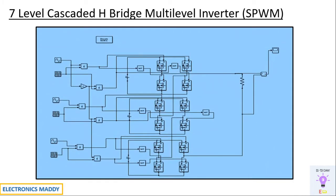This is the MATLAB model of a seven level cascaded H-bridge multi-level inverter using SPWM technique. Previously I've done two videos with respect to a five level cascaded H-bridge multi-level inverter — one using the conventional method based on switching sequence and one using SPWM technique. In case you haven't watched those videos, please do watch them; they'll be available in the end screen and the link will be provided in the description.